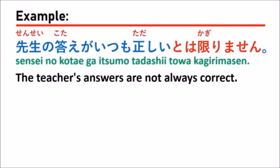いつも とは限りません means 'it's not always true' or 'it's not always correct.' 先生の答えが いつも とは限りません means the teacher's answer is not always correct — sometimes it's not true, it's not correct, because a teacher is also a human, and humans can make mistakes sometimes.